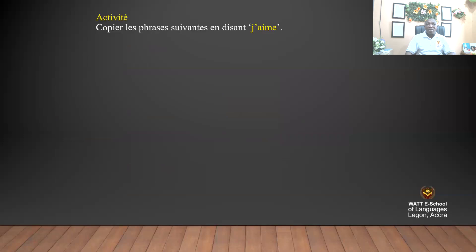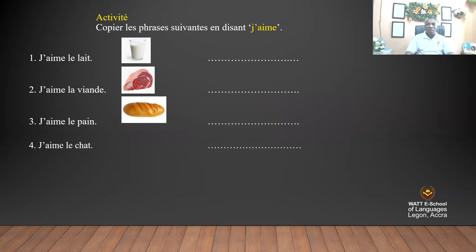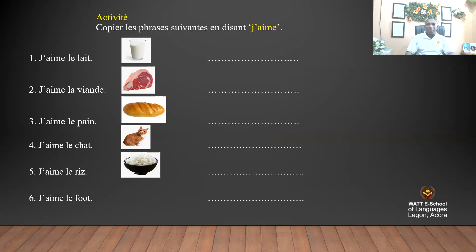Let's have a look at this activity. Copy the sentences below by saying j'aime. With a picture display, you say: J'aime le lait — I like milk. J'aime la viande — I like meat. J'aime le pain — I like bread. J'aime le chat — I like cats.